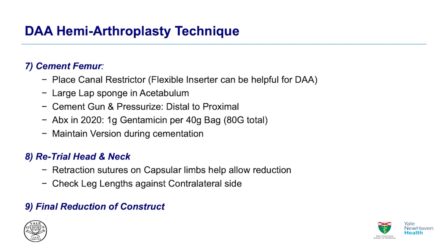Cementing the femur: I do use a canal restrictor. We use a disposable set with a flexible inserter handle, very helpful for direct anterior. I put a large lap sponge in the acetabulum to prevent any liquid cement falling behind the femur. I do the cement gun and pressurize very carefully, going from distal to proximal and evacuating distally with a suction tube. In 2021 I still use gentamicin at one gram per 40-gram bag, two bags. We carefully maintain the stem version, marking the neutral point with a marker.